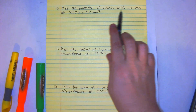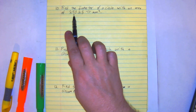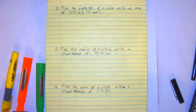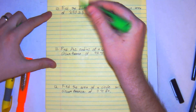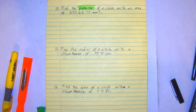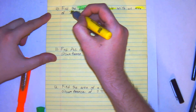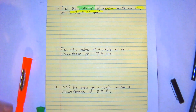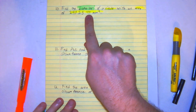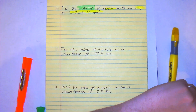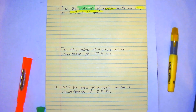Number 10 says: find the diameter of a circle with an area of 240.25 pi millimeters squared. So what we're given is we're trying to find the diameter — that's our goal. One thing we need to see is that this is in terms of pi, so they want an exact answer. We're not really estimating; we're leaving that value of pi as-is.